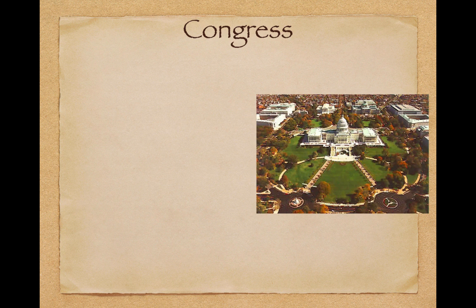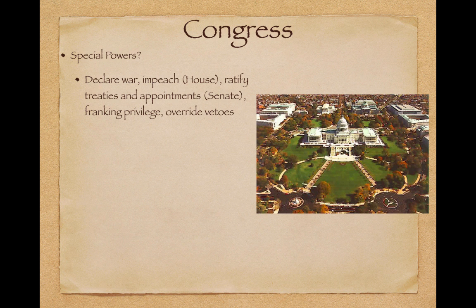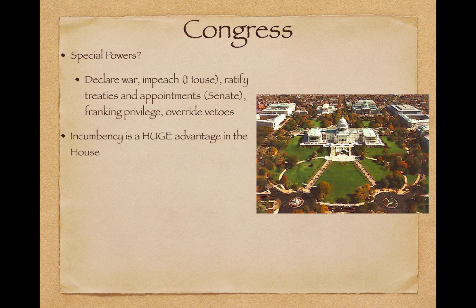Let's start talking about Congress. Special powers you must know that are given to Congress: they can declare war; the House does the impeaching; ratifying treaties and appointments is a Senate power; the Senate is also the jury in an impeachment trial. Franking privilege allows them to use the post office to send stuff to their constituents, and they can also override presidential vetoes.